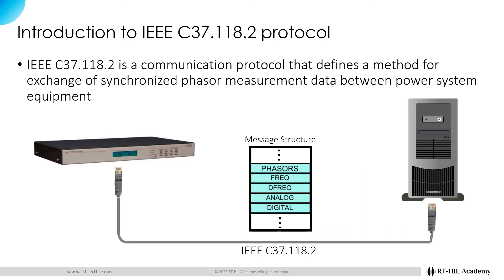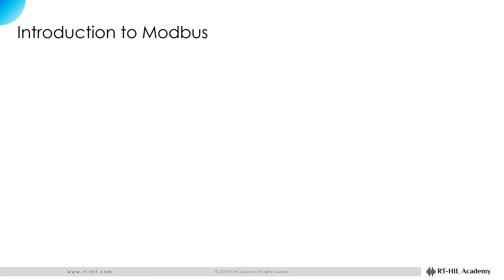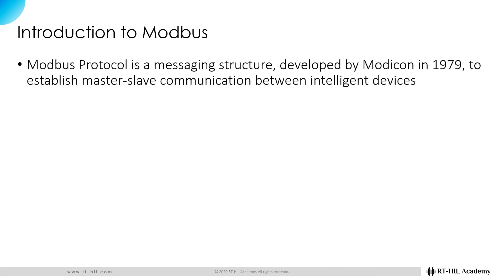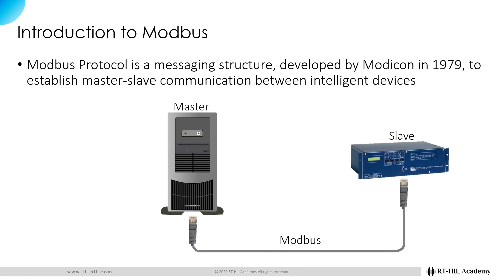Now that we have discussed the IEEE C37.118.2 protocol, it is time to review the Modbus protocol. What is Modbus? Modbus protocol is a messaging structure developed by Modicon in 1979. It is used to establish master-slave communication between intelligent devices. Modbus can be used over Ethernet as well as serial cable. In this course, we are interested in the TCP/IP version of Modbus, which is the one used over Ethernet.